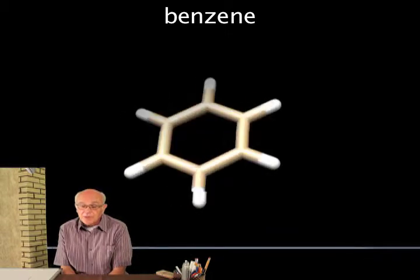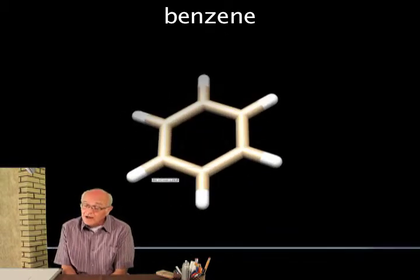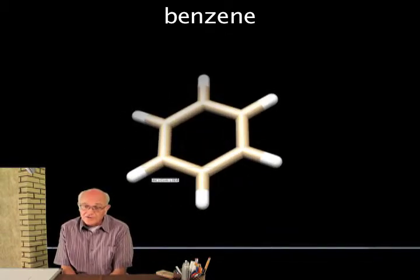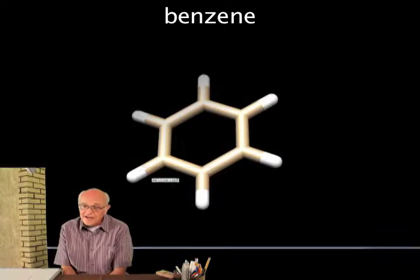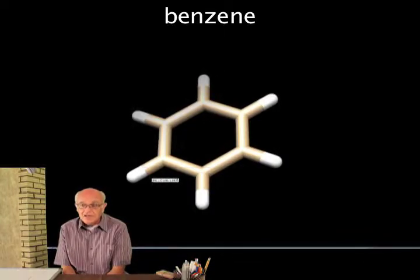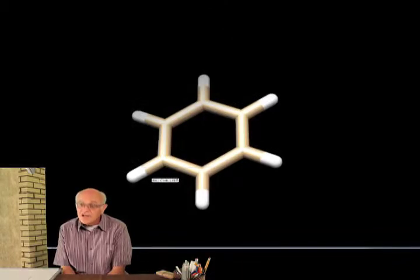This shows the stereotypical aromatic compound — it's called benzene. It's a six-membered ring, it's flat, there's a cloud on the top and a cloud on the bottom, with six carbons and six hydrogens only.